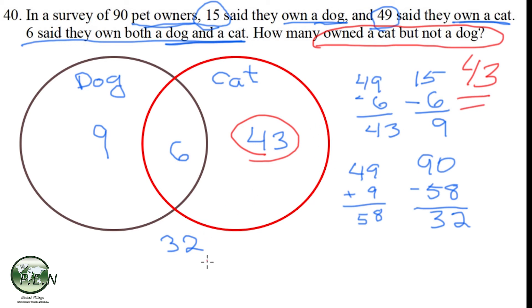But we also could have answered the question, how many pet owners don't own a dog or a cat? That would be 32. How many only own a dog? That would be 9. Of course, they gave us how many own both in the beginning. But you see that once we get a Venn diagram set up, we can answer multiple questions from it.